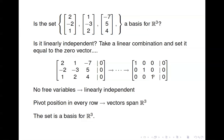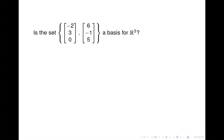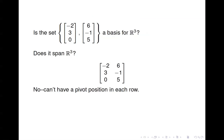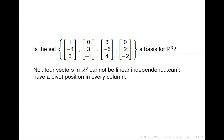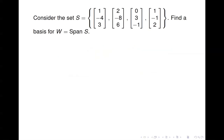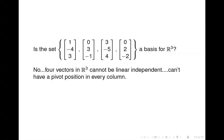In echelon form: pivot position in every column means linearly independent; pivot position in every row means spans R3. Here's another set — is it a basis for R3? There are only two vectors, and in R3 you need at least three to span; you can't have a pivot position in every row with only two vectors, so they can't span R3 and therefore can't be a basis. What about a set with four vectors in R3? Four vectors can't be linearly independent in R3 because with only three rows you can't have a pivot position in every column, so they're not linearly independent.